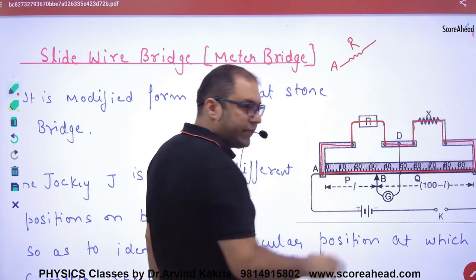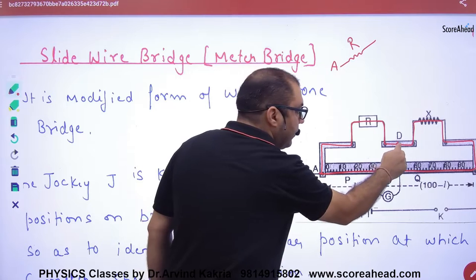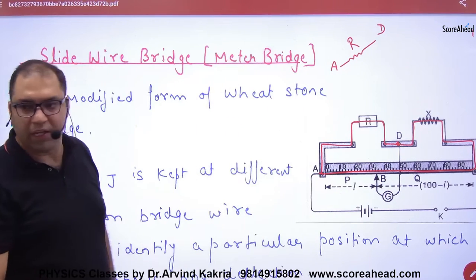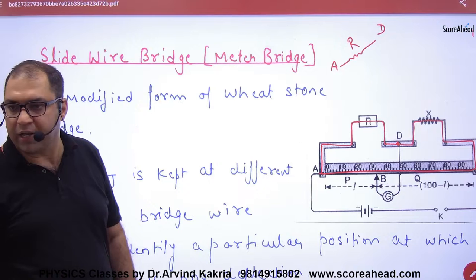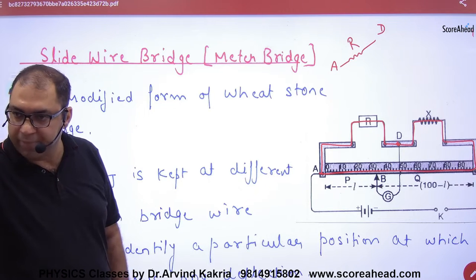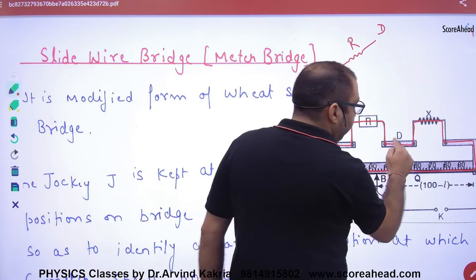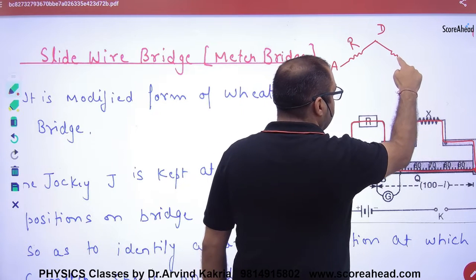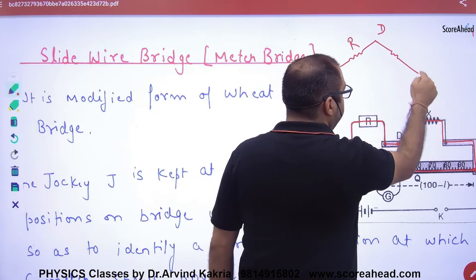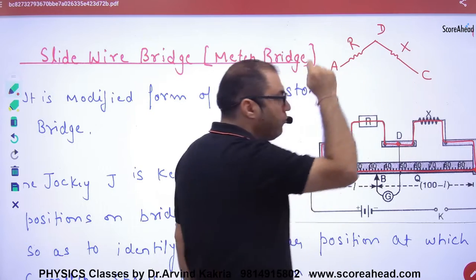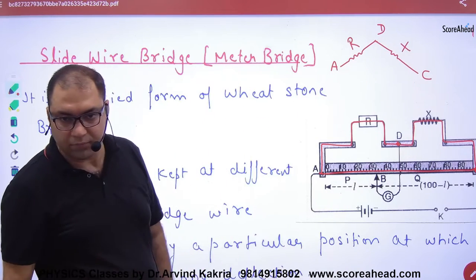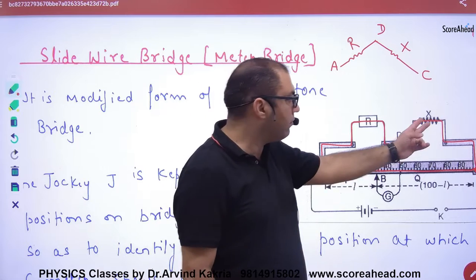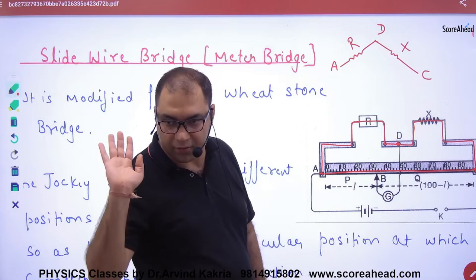A and R are connected. D is the point where A and D are connected, so the resistance between A and D is R. Further, D is connected to C, and the resistance between D and C is X.